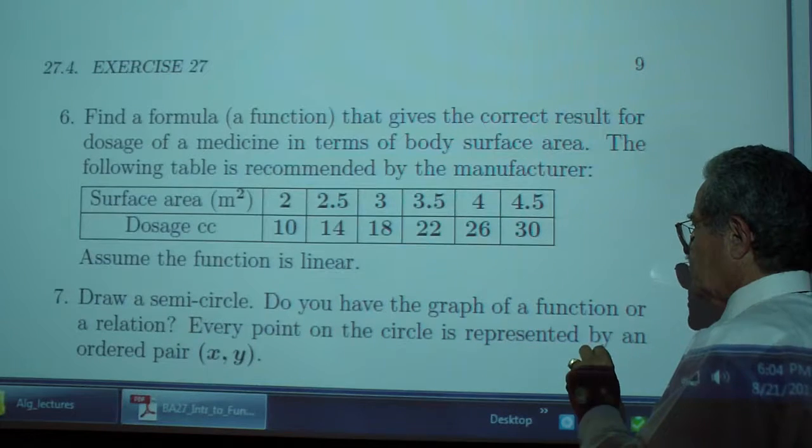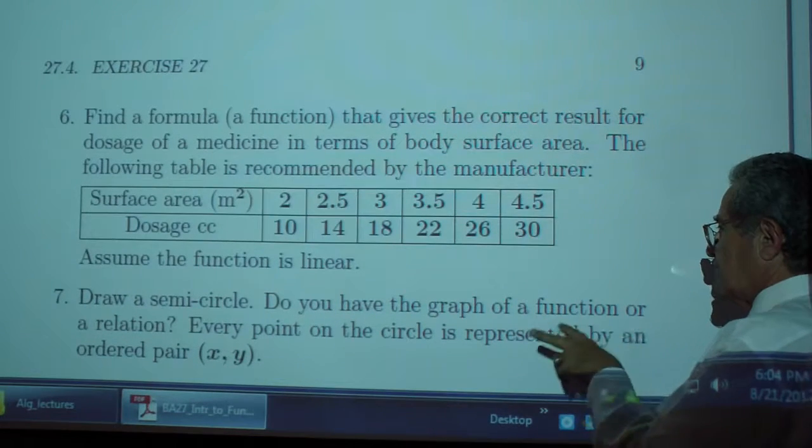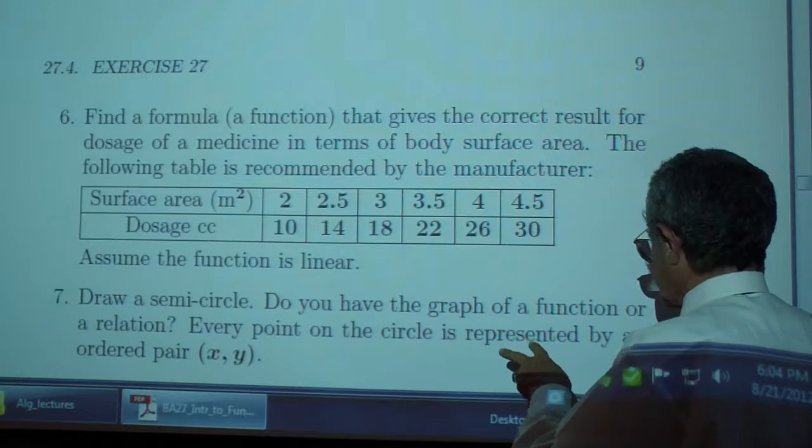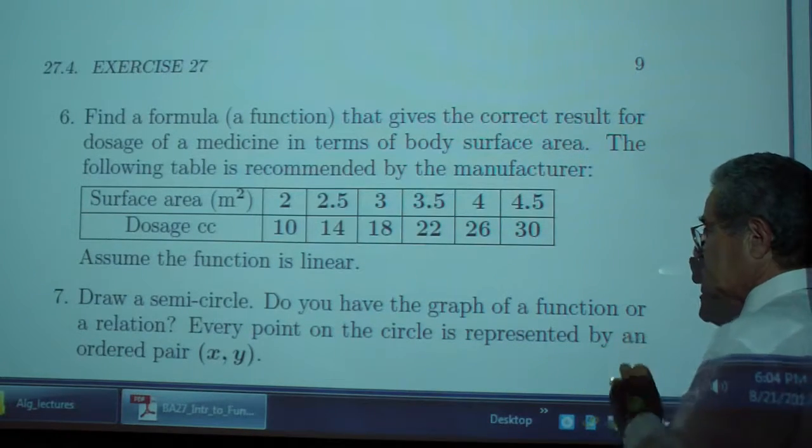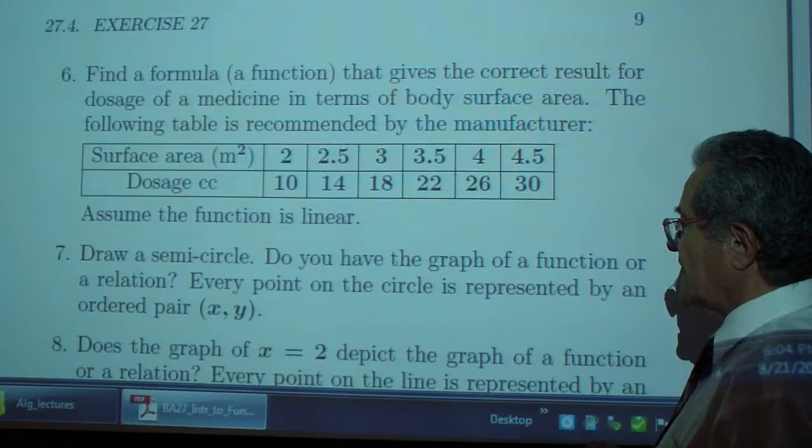And then draw a semicircle. Do you have the graph of a function or relation? Every point on the circle is represented by an ordered pair x, y.